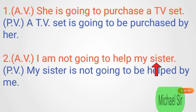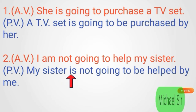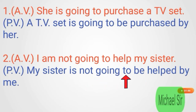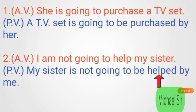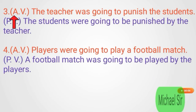Here 'my sister' is the object. 'My sister' becomes the subject in passive voice. According to the subject, we write the helping verb — since 'my sister' is singular, we write 'is'. As it is a negative sentence, 'not' comes after the helping verb. Then we write 'going to', followed by 'be', and after 'be' the third form of 'help', which is 'helped'. Then the object with preposition — 'I' becomes 'me'.